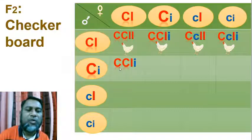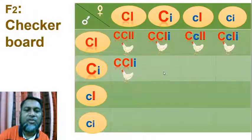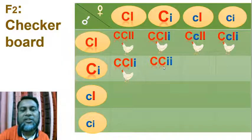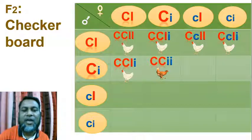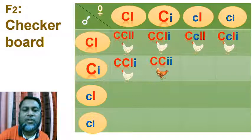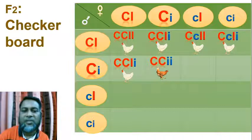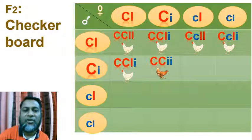Here is an exception: color genes are present but inhibitor genes are absent. As a result, this fowl is colored. Due to the absence of the inhibitor gene, the color gene can be expressed, and the fowl shows a colored phenotype.